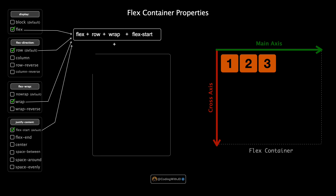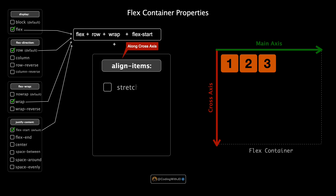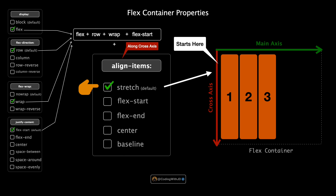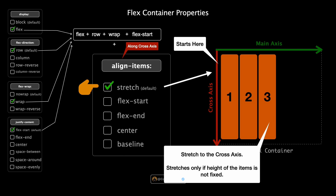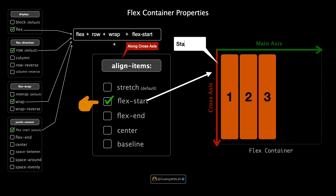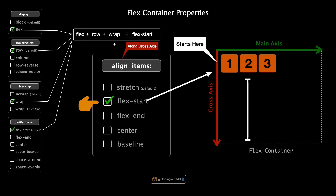Next is align-items, a flexbox property that controls how items are positioned along the cross axis — perpendicular to the main axis, which we adjusted with justify-content. The values are: stretch, flex-start, flex-end, center, and baseline. Let's start with stretch, the default setting. When set to stretch, flex items will expand to fill the container's height or width, ensuring every item is as tall as the flex container unless you've specified a height.